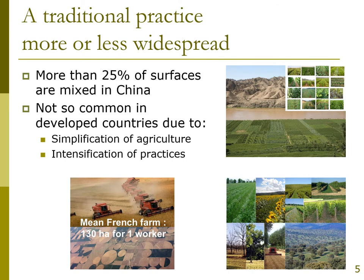It's interesting to notice that intercropping is in fact a very old practice, developed thousands of years ago when the first humans started farming because at that time they didn't know how to grow sole crops. Today, if you have a broad view of world production, there are countries where intercropping is still very well developed, like in China where more than 25% of surfaces are estimated to be mixed crops. While this practice has been forgotten, it is less and less developed in industrial countries with very intensive agriculture, like European countries and France. This is due to the simplification of agriculture, meaning farmers are growing less diversified cropping systems with only a few species covering most surfaces.